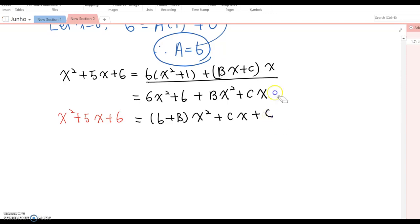Since the last term, 6 and 6 are equal to each other, now we can set up 6 plus b equal to 1 because that coefficient becomes 1, and then c equal to 5. So we found c equal to 5 already. Now from here, b equal to negative 5.